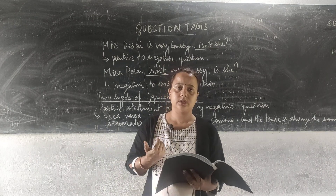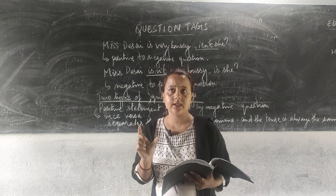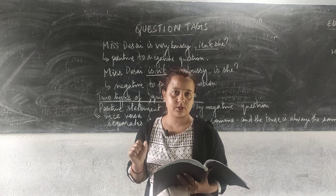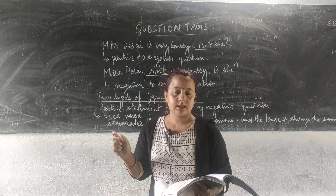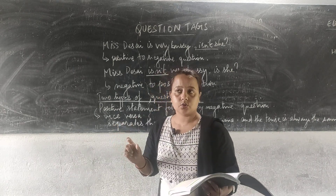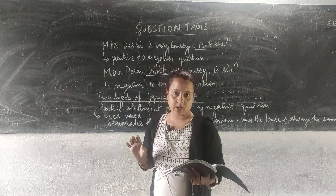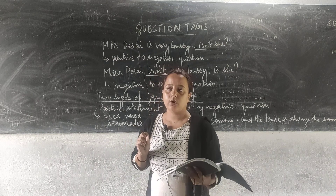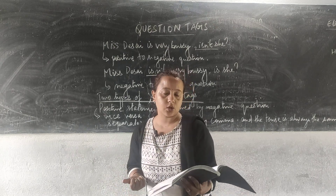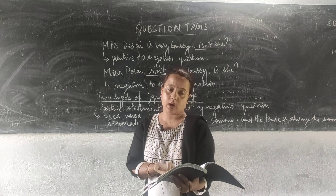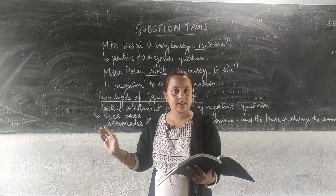A positive sentence can be changed into a negative, and a negative can be changed to positive. For example, 'Miss Thisi is very busy' — reading the first half, you understand this is a positive statement. Then at the end we add 'isn't she?' which is negative. This is what happens in a question tag: two parts are merged together, always separated by a comma. The main noun remains the same — 'Miss Thisi' — and the sentence ends with the negative tag 'isn't she.'